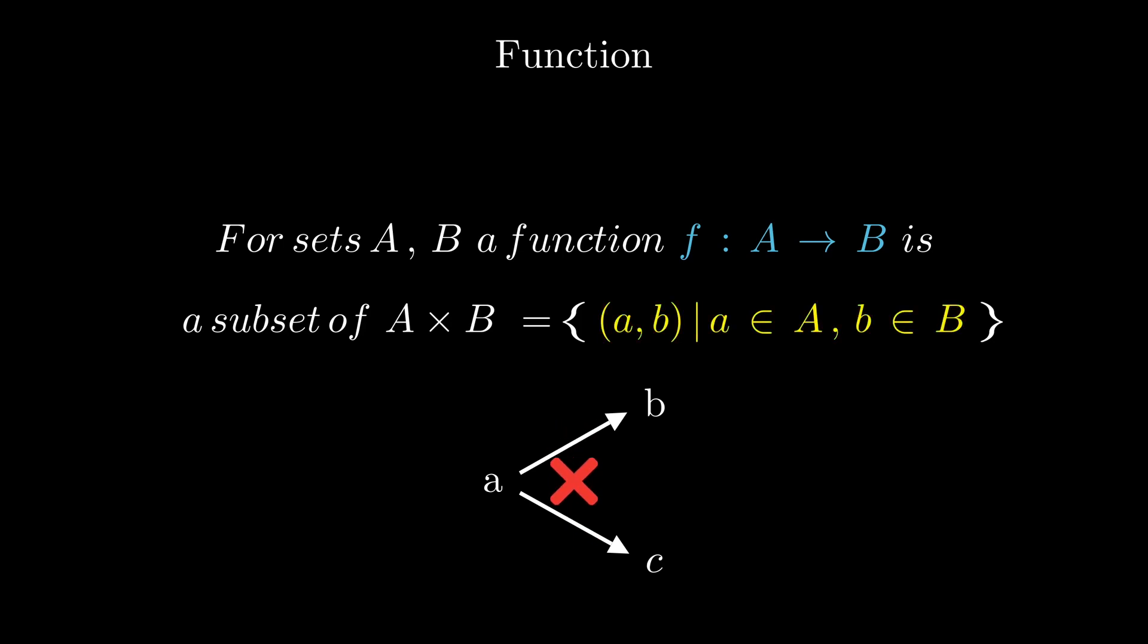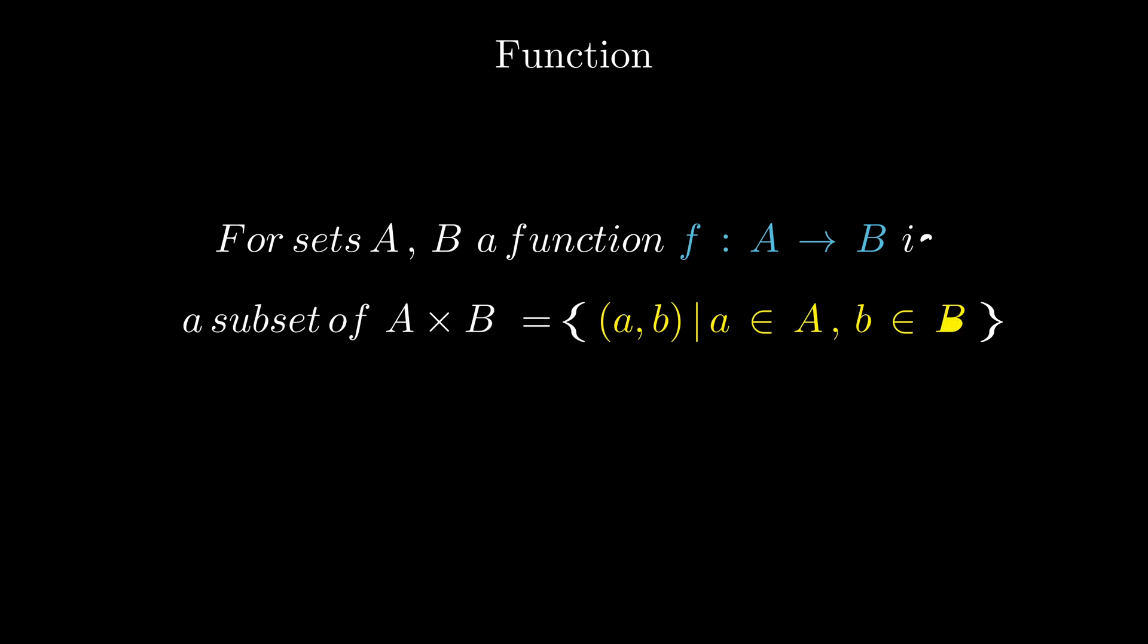That is, this subset cannot contain both AB and AC, where B and C are different. That is why this is not a graph of a function, but this one is.